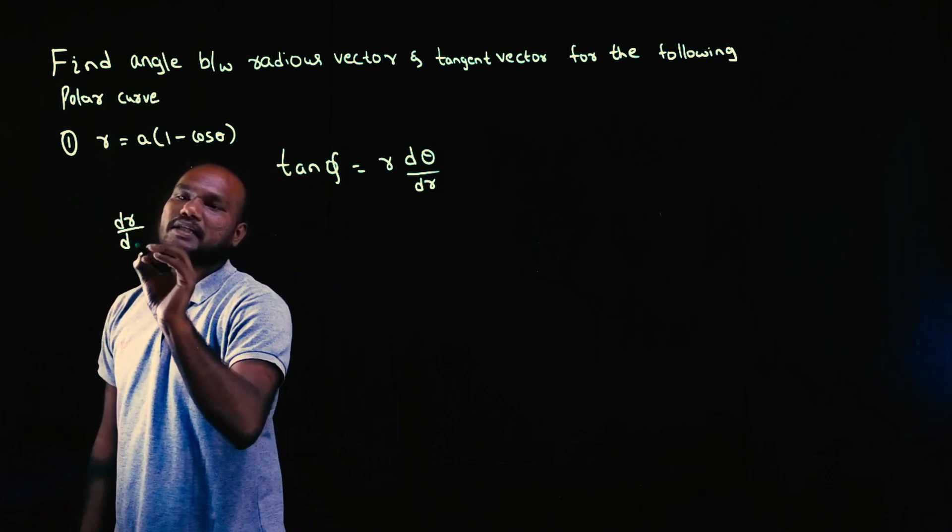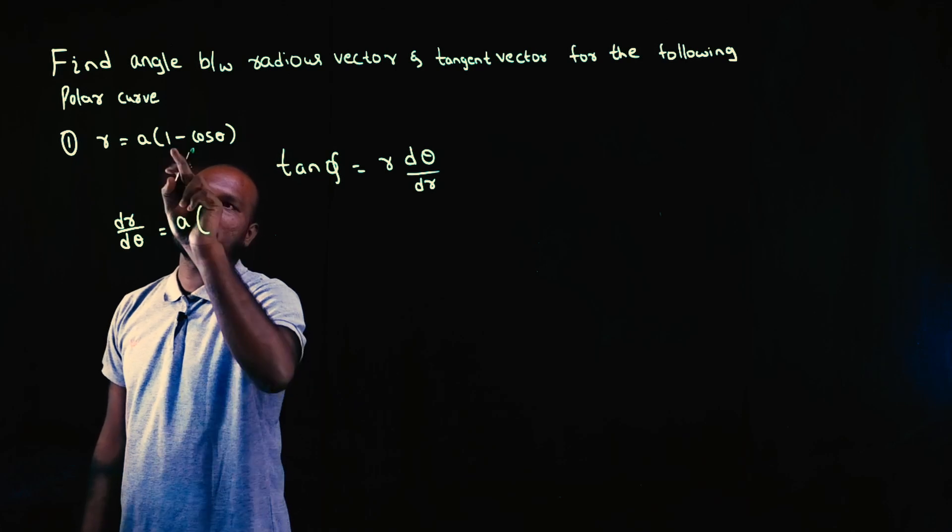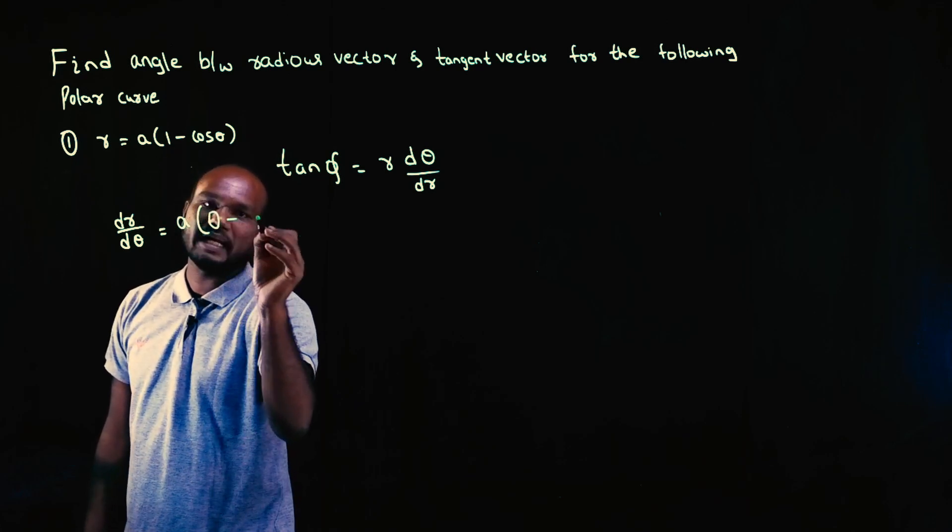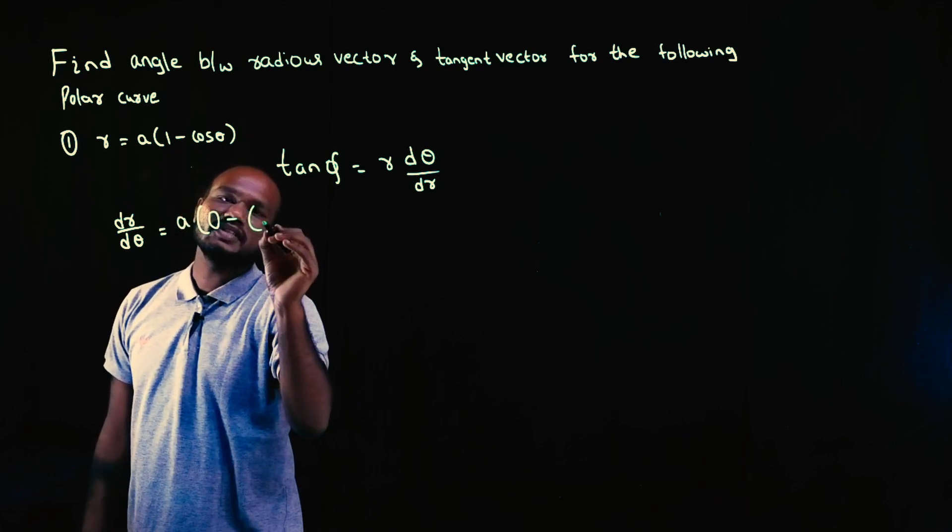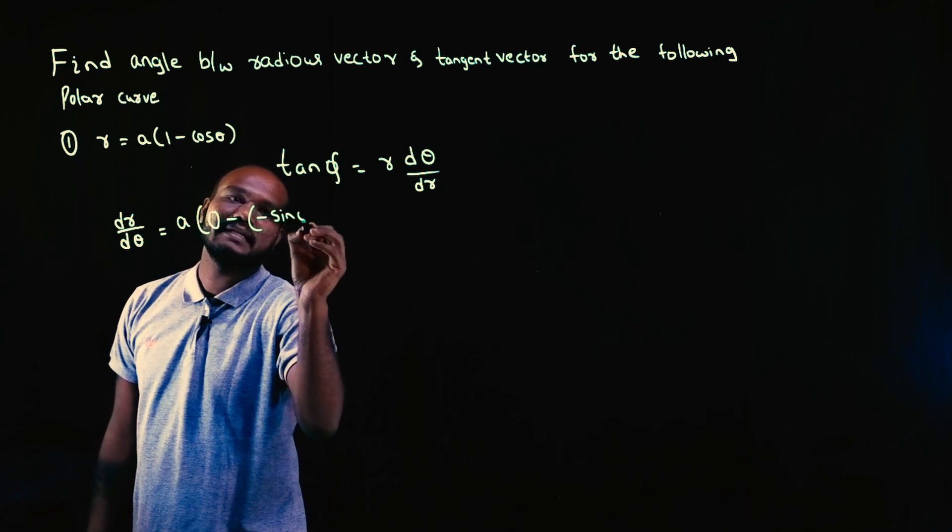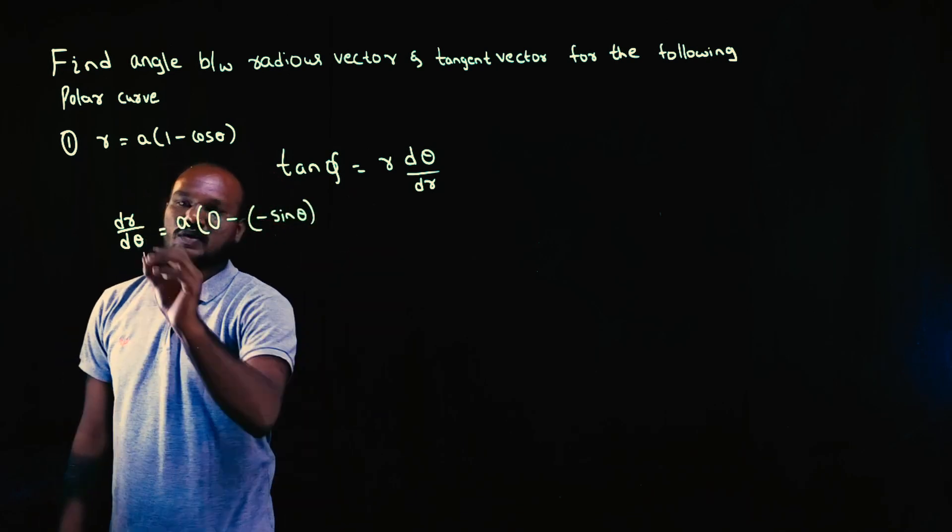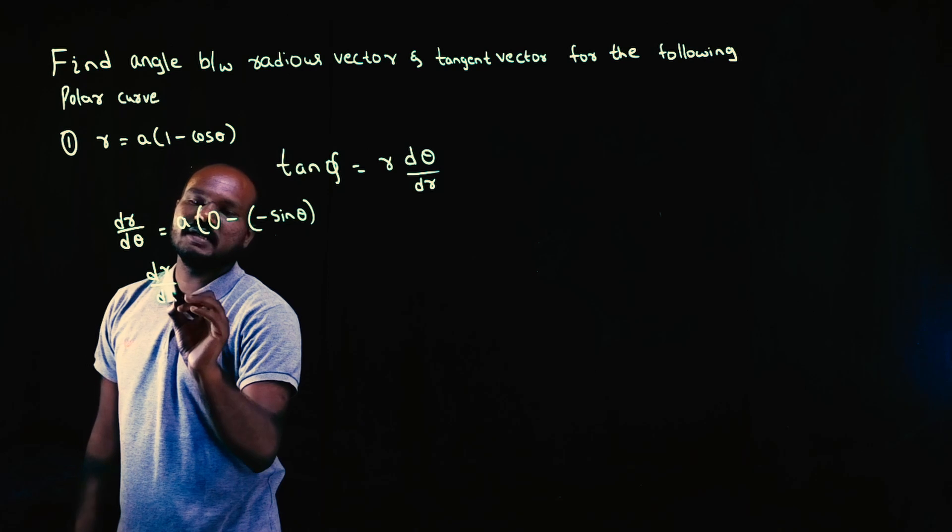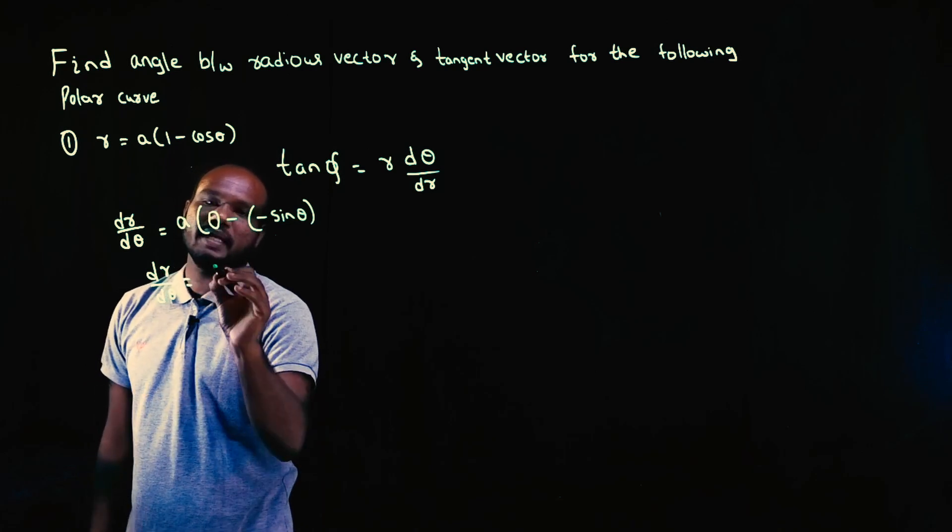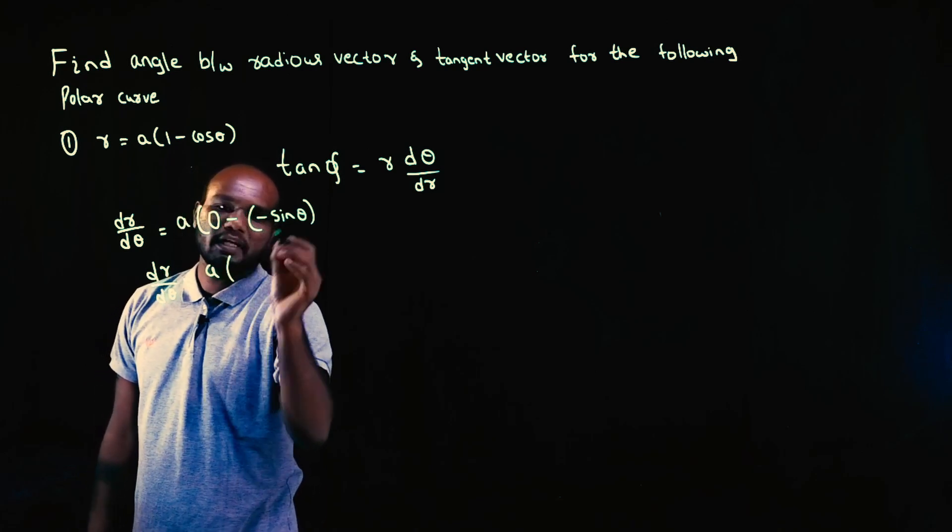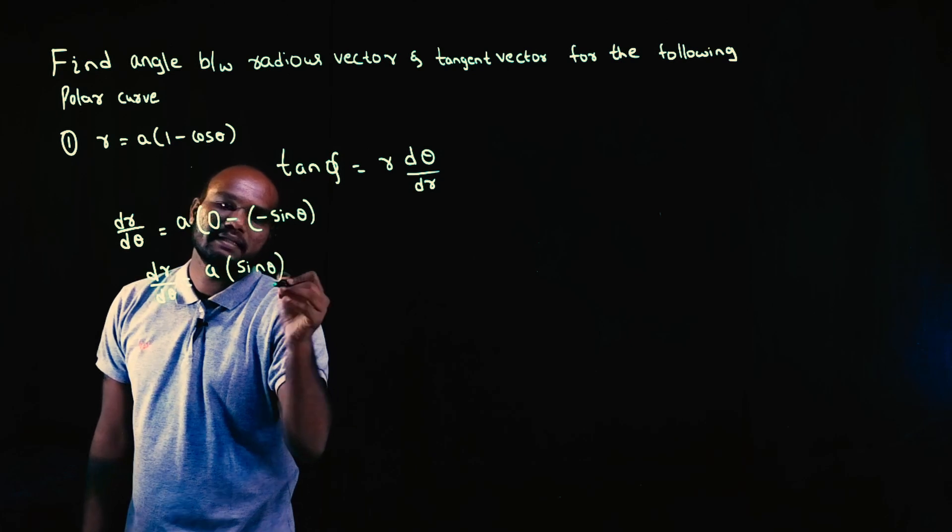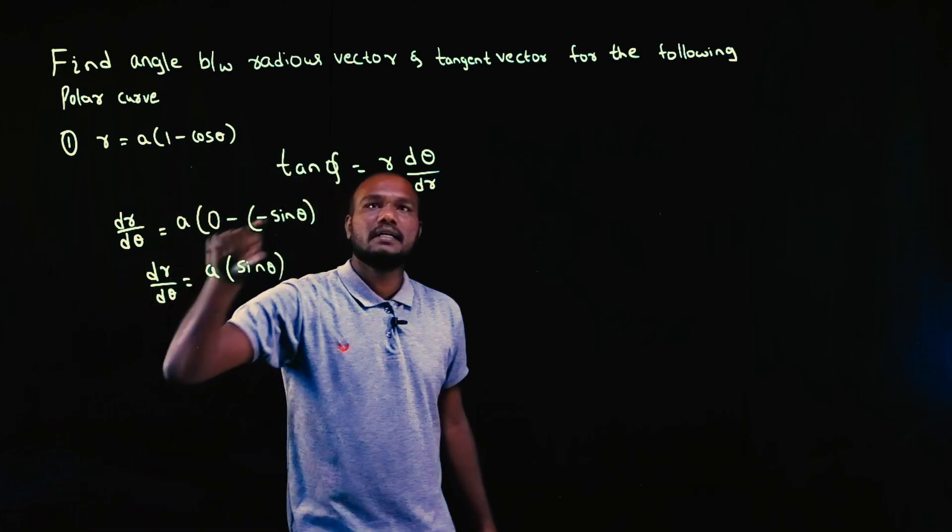A is a number. Never care about a number. One differentiation is 0, minus cos θ differentiation is minus sin θ. So dr by dθ is equal to a into minus into minus is plus sin θ. This is the value of dr by dθ.